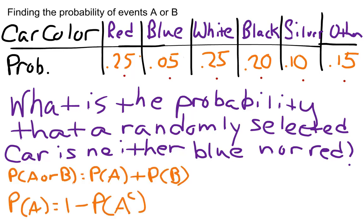In order to find the answer, we're going to combine two formulas: the formula for the probability of events A or B, and the formula for our complement rule. The probability of seeing a blue car is 5%, and the probability of seeing a red car is 25%. So the probability of A or B, in other words blue or red, is 5% plus 25%, which gives us 30%.